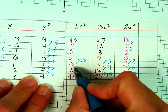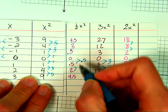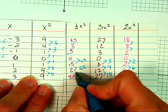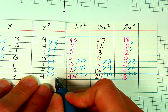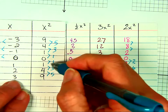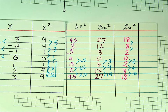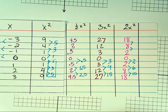So just remember this 1, 3, 5. You're going to be able to take A and multiply it by 1, 3, and 5, and you'll know how many to go up after you go over 1.